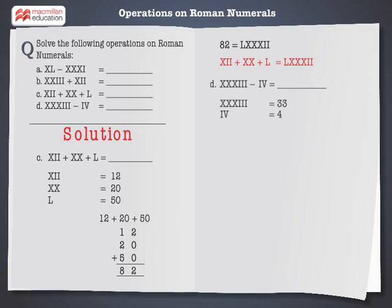Let's first convert these Roman numerals into Hindu-Arabic numerals. XXXIII is equal to 33 and IV is equal to 4. Now subtract 4 from 33. The result of 33 minus 4 is equal to 29.